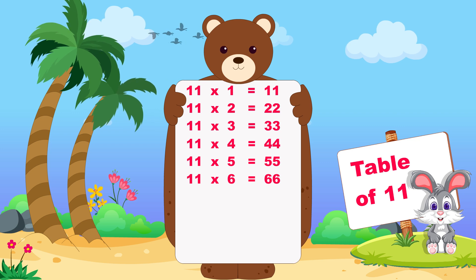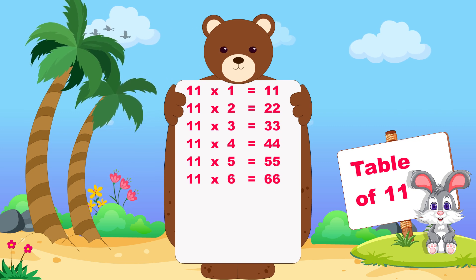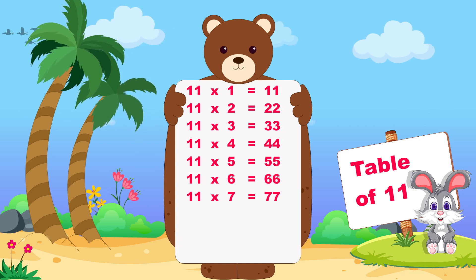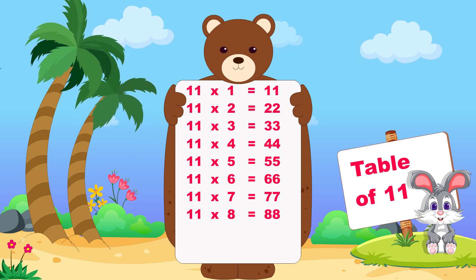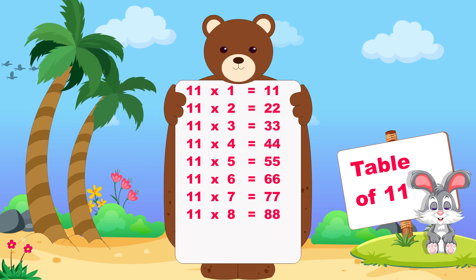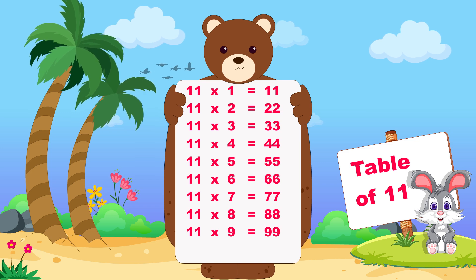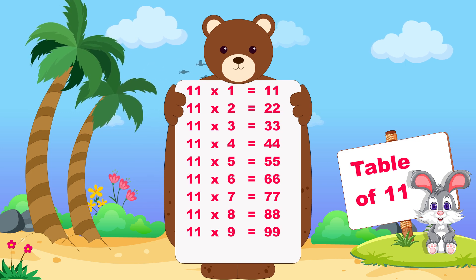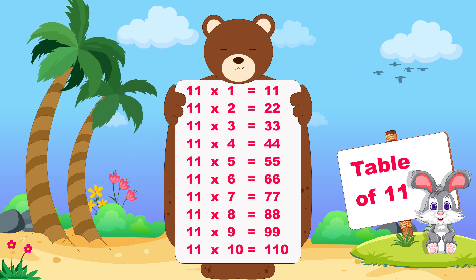Eleven sixes are sixty-six, eleven sevens are seventy-seven, eleven eights are eighty-eight, eleven nines are ninety-nine, eleven tens are one hundred ten.